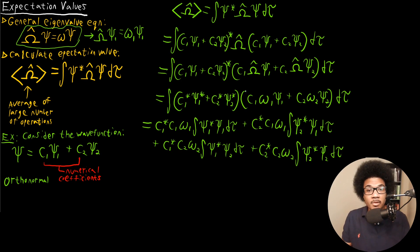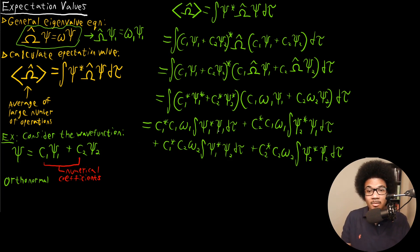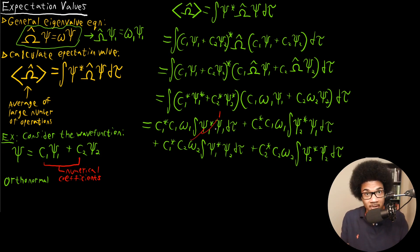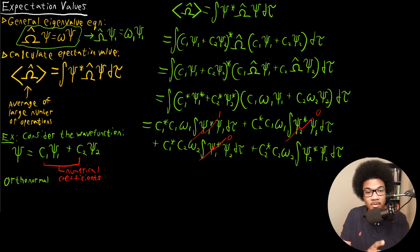These are the four integrals you get — if you're unsure, apply the general FOIL method to the terms above to verify. Now the fact that we have an orthonormal wave function comes into play. If the wave functions are orthonormal, then the integral of Psi1*·Psi1 over all space equals one (normalized), and the integrals of Psi1*·Psi2 and Psi2*·Psi1 equal zero (orthogonal — different states integrate to zero), while the integral of Psi2*·Psi2 equals one.